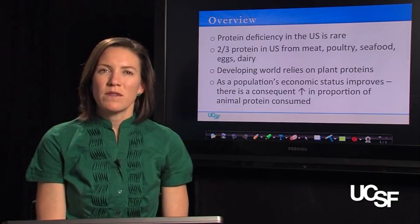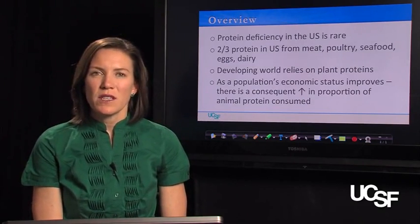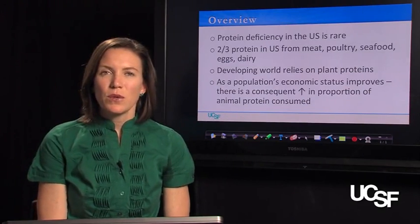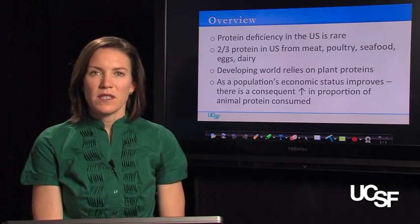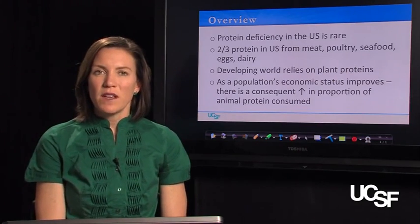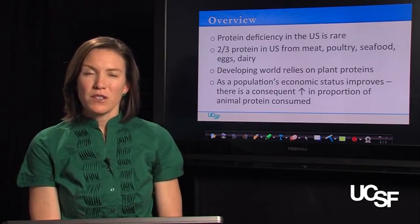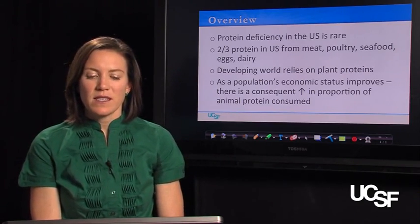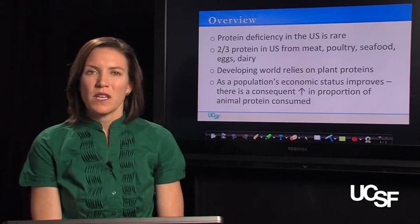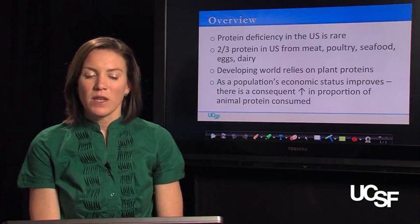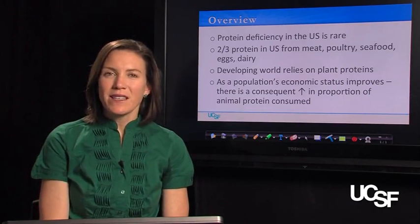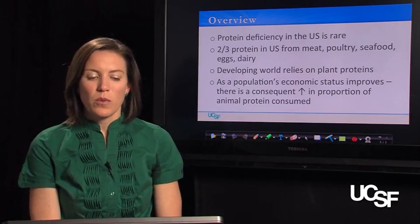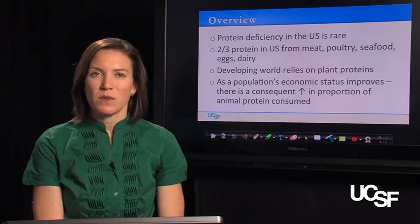In the United States and in most developed countries, protein deficiency is very rare. Two thirds of the protein in the diets of people in the United States come from animal foods: meat, poultry, seafood, eggs, and dairy. In the developing world, countries tend to rely more heavily on plant proteins. As a population's economic status improves, there is a consequent increase in the proportion of animal protein consumed.